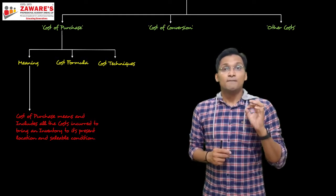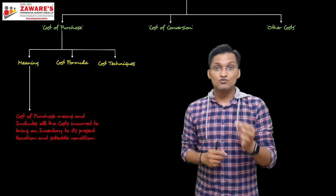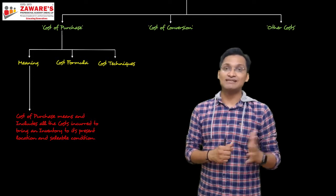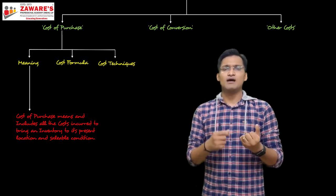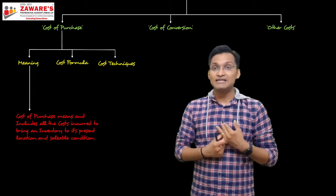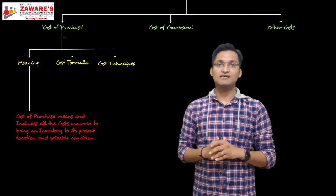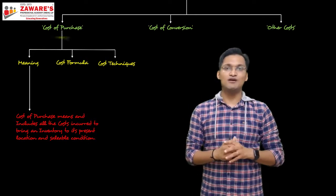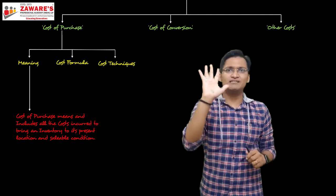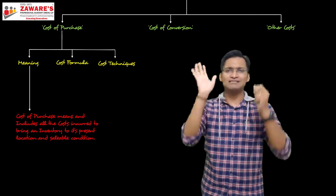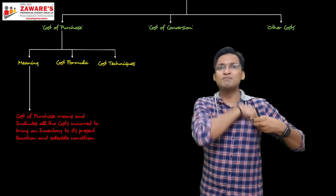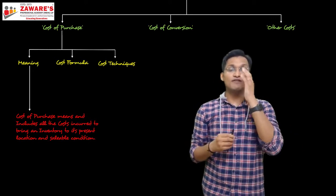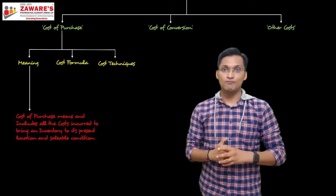Important specific exclusions from cost of purchase: trade discount is excluded. Any refundable taxes — taxes you pay first but get refunded later, such as those with input tax credit (ITC) available — are never considered for cost calculation. Simple rule: if money permanently left your pocket, it is your cost. But if it went out temporarily and will come back — as a duty drawback, incentive, subsidy, or input tax credit — then it is refundable and not included in cost.